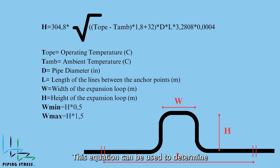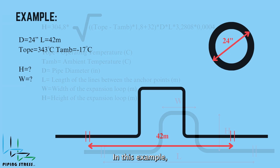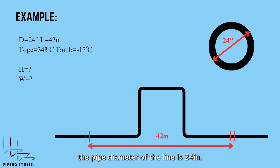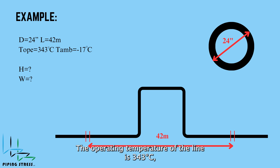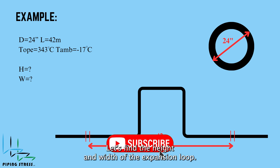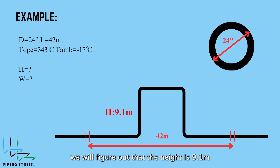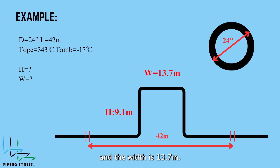This equation can be used to determine the size of the expansion loop. In this example, the pipe diameter is 24 inches and the length is 42 meters. The operating temperature is 343 degrees Celsius and the ambient temperature is minus 17 degrees Celsius. Once we apply these figures in the formula, we find that the height is 9.1 meters and the width is 13.7 meters.